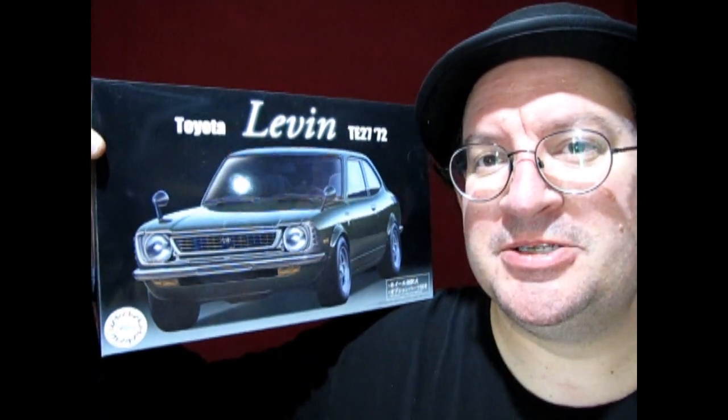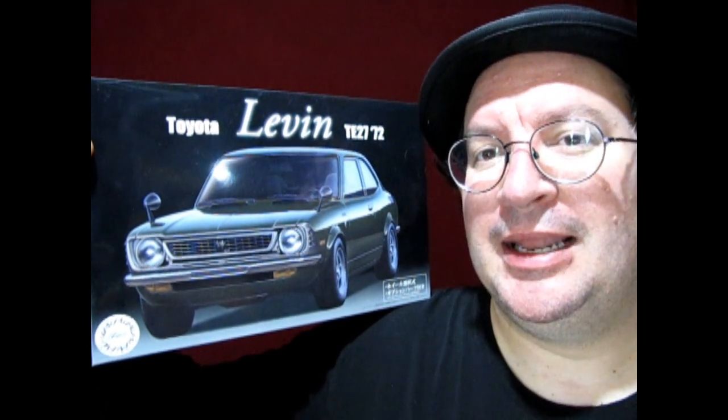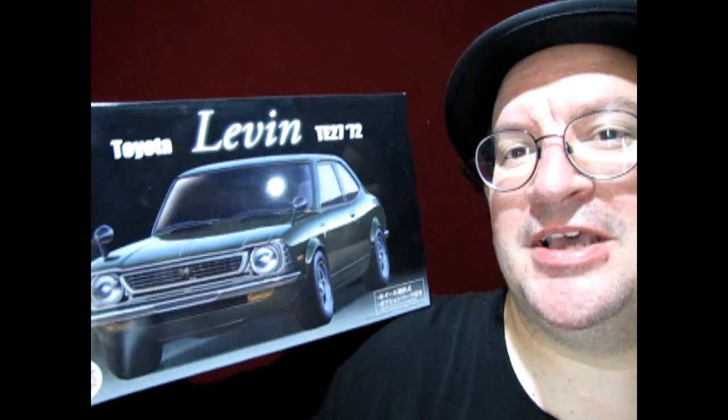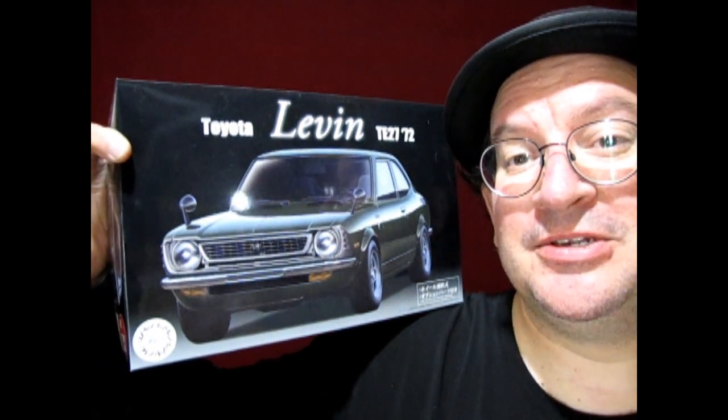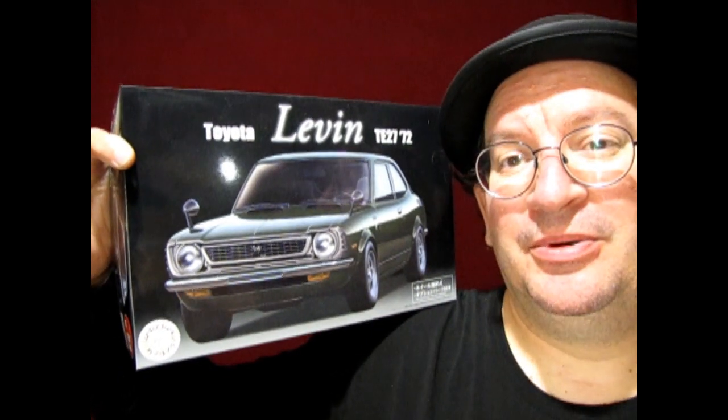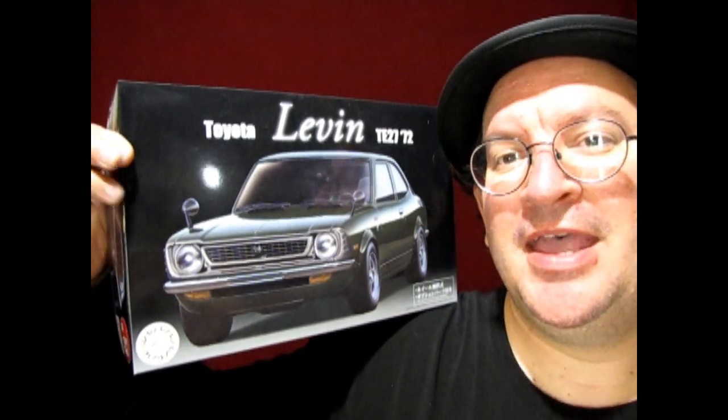This is the Fujimi kit. This is a 1972 Toyota 11 TE27. This is what the car was known as in Japan. But over here, of course, it was a Toyota Corolla SR5.